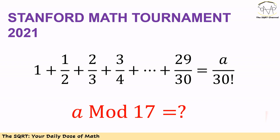Hello everyone. In this video we are going to talk about a problem from the Stanford Math Tournament in 2021. In this number theory problem, we have 1 plus 1/2 plus 2/3 plus 3/4, up to 29/30, equal to a over 30 factorial. We want to find a mod 17. Before moving to the solution, make sure you pause the video to think about the problem.